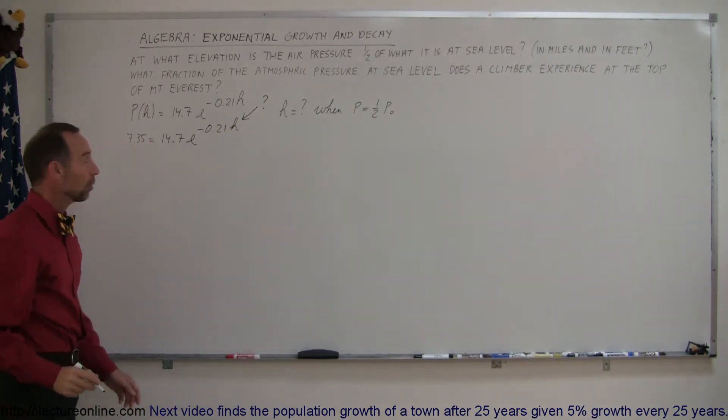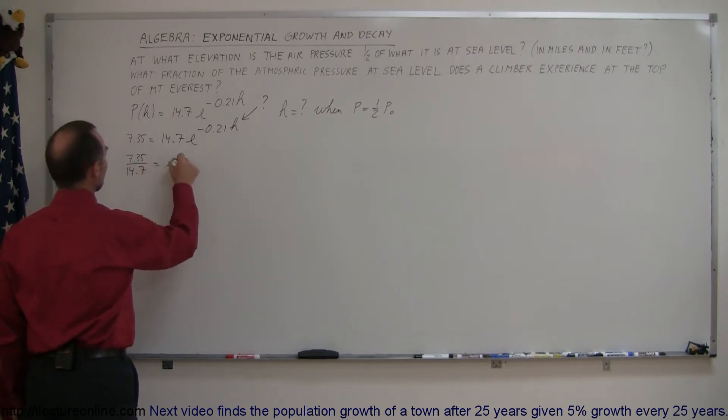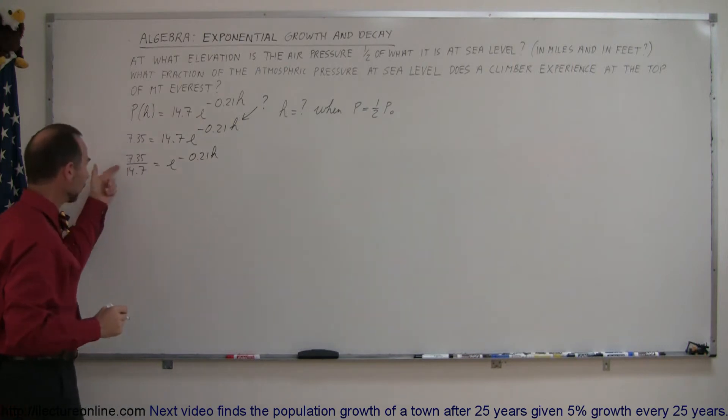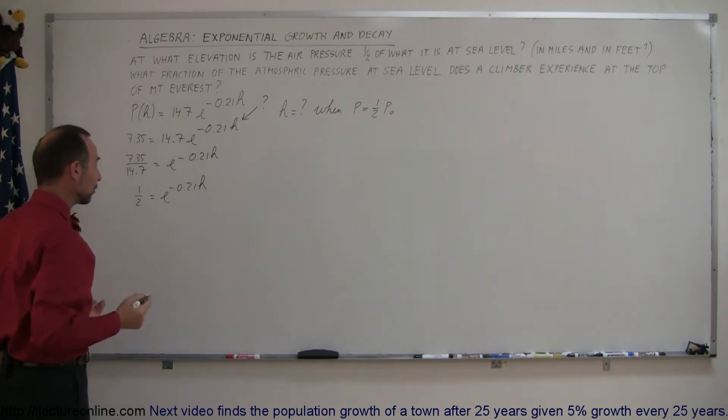Let's divide both sides by 14.7, so it gives us 7.35/14.7 = e^(-0.21H). Of course, this divided by that was one-half—that's the whole point of the problem. We're trying to find the height when the pressure is one-half the original pressure.